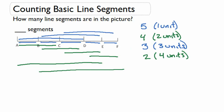And finally, we'd have one more segment that would be all five units long. So we have five plus four plus three plus two plus one, which gives us a total of fifteen line segments.